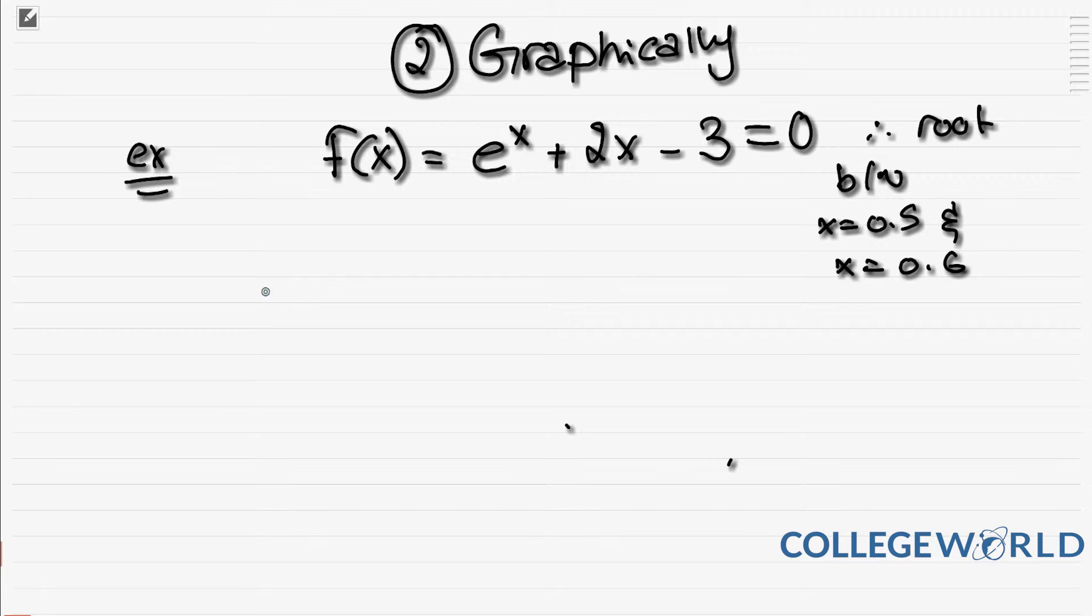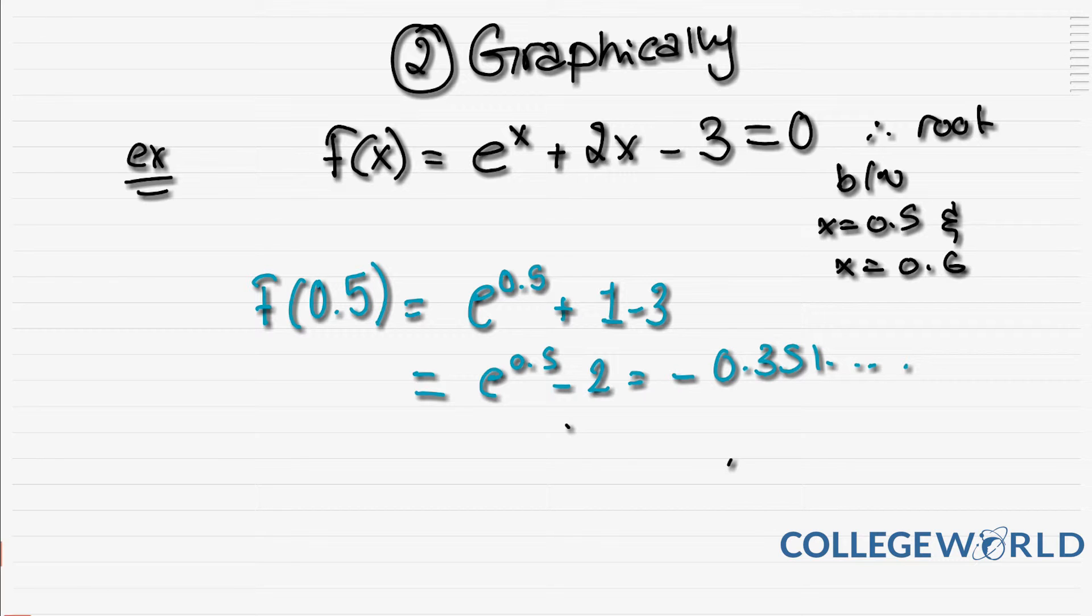The way you solve questions in this chapter: you say, okay, they want to see what happens when x = 0.5. So f(0.5), you're going to say e^0.5 + 1 - 3, which is e^0.5 - 2. You're going to find that this equals -0.351, etc.